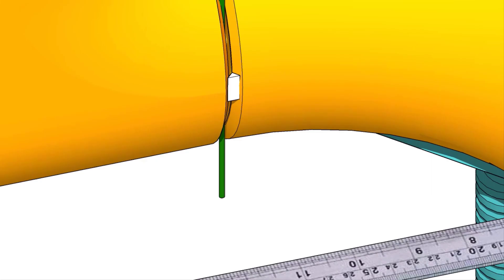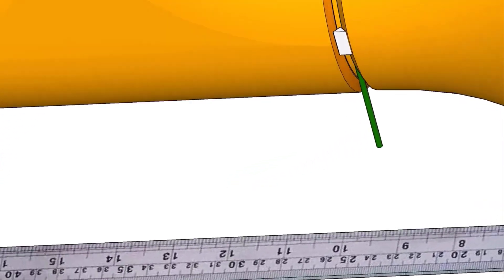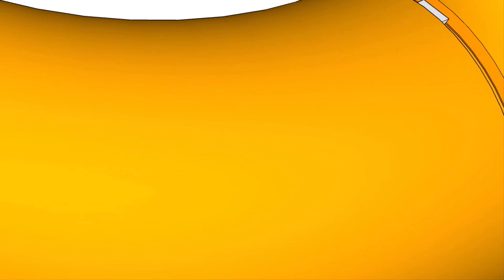Tack weld on both sides of the elbow. Remove the gap rod.